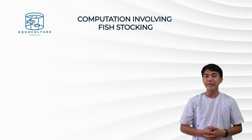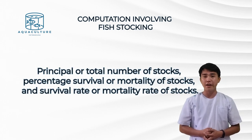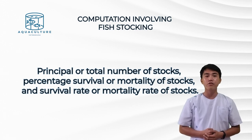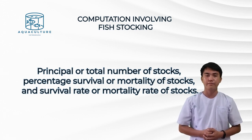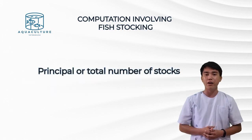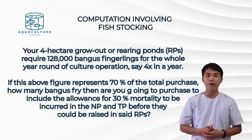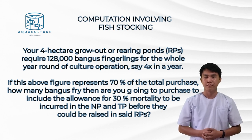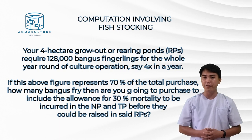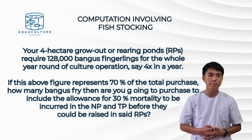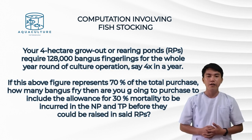Next, we will find the principal or total number of stocks, the percentage survival or mortality of stocks, and survival rate or mortality rate of stocks. Example problem: your four-hectare grow-out rearing ponds (RPs) require 128,000 bangus fingerlings for a whole year round of culture operation — four times a year. If this figure represents 70% of the total purchase, how many bangus fry will you purchase to include the allowance for 30% mortality incurred in the NP and PP before they are raised in the RPs?